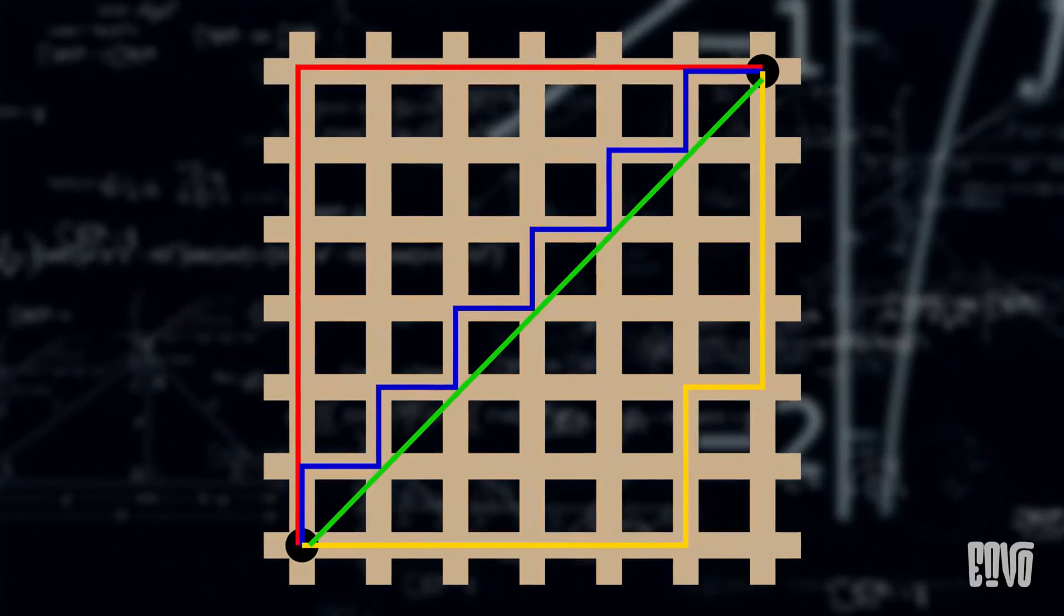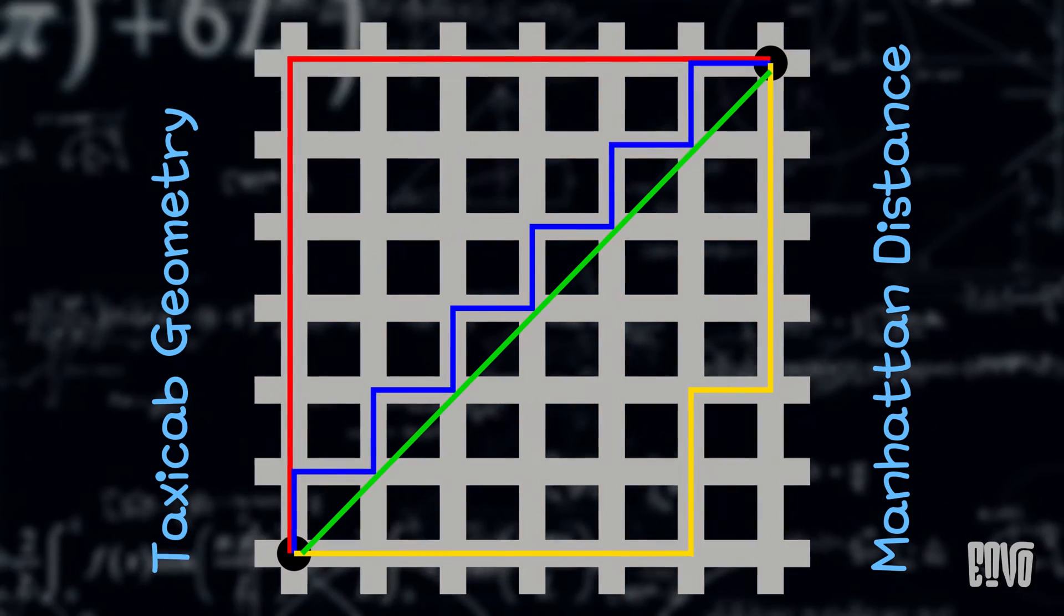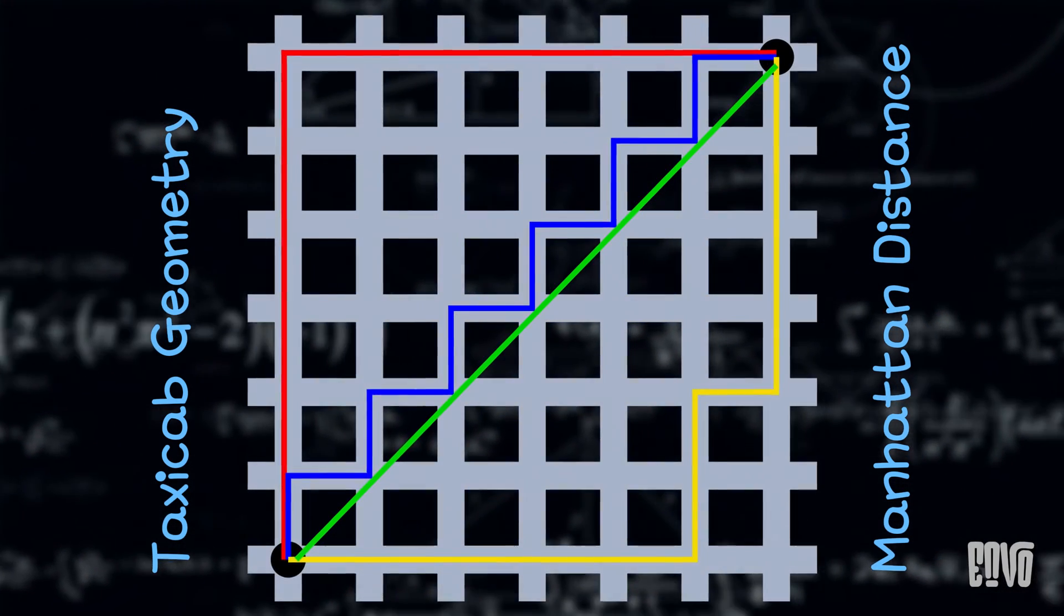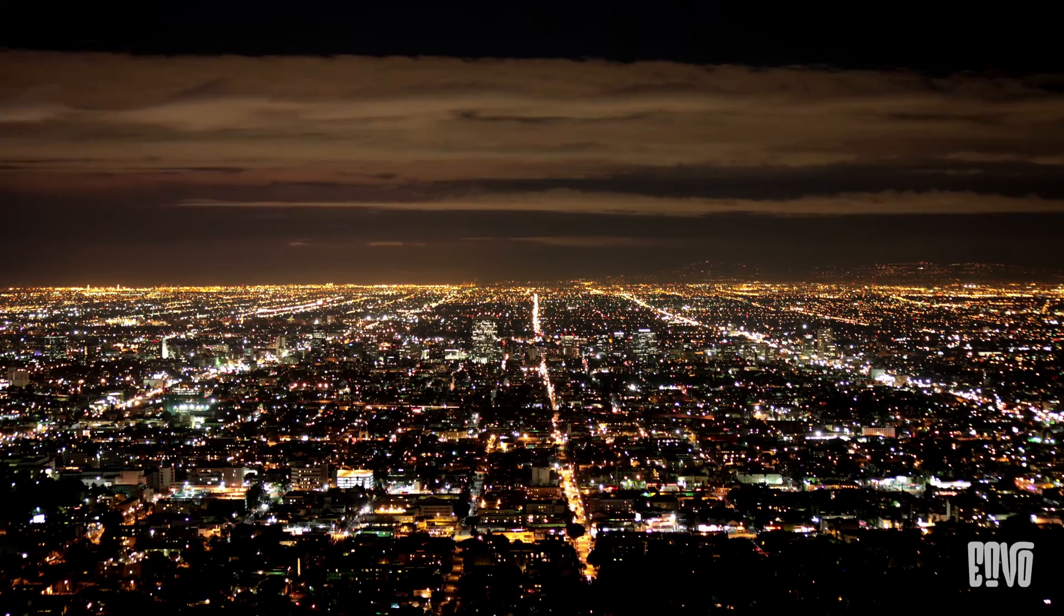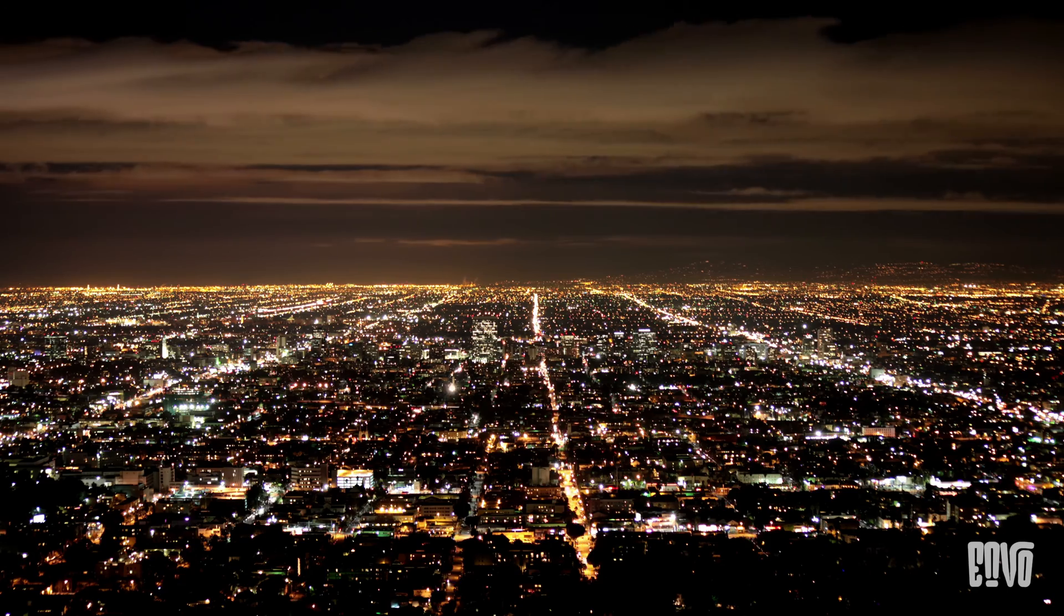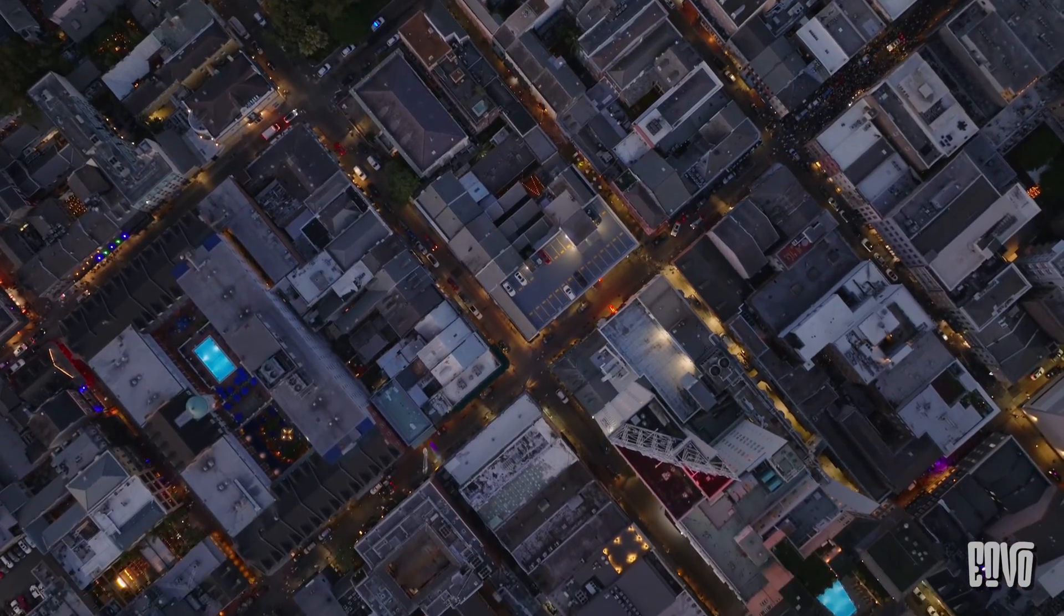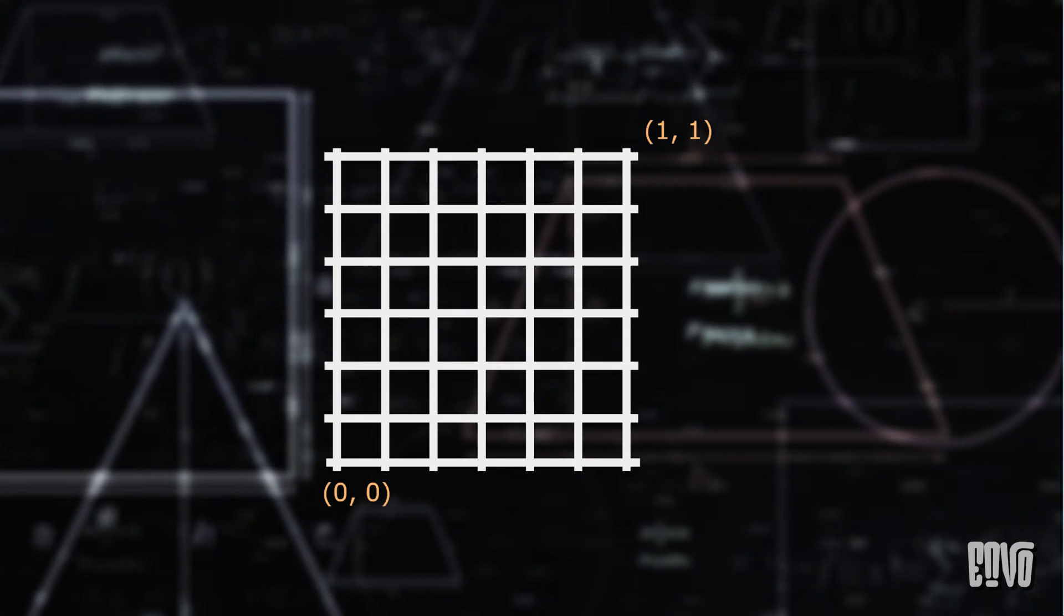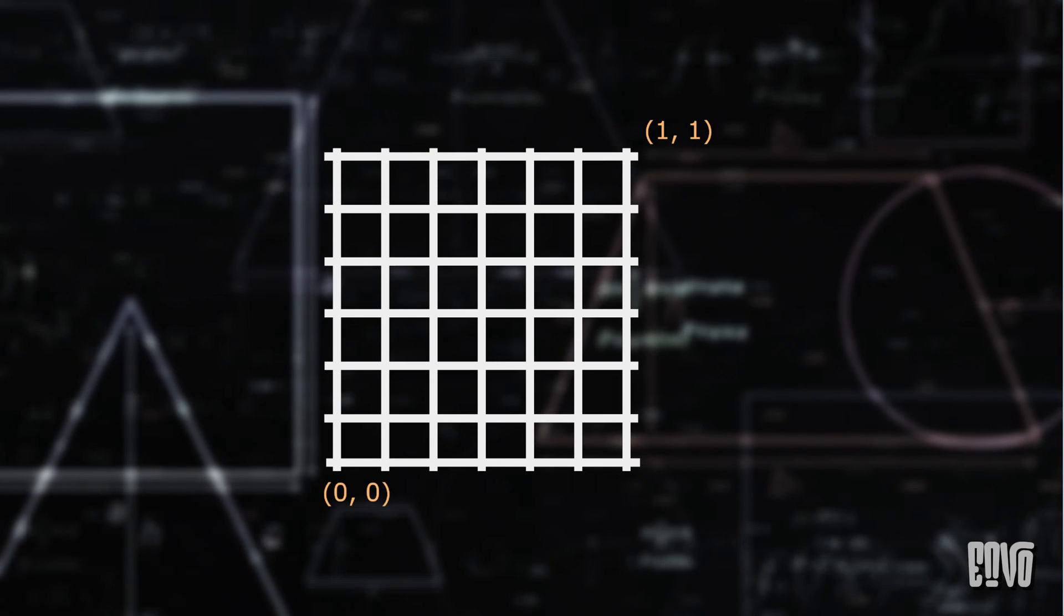The staircase paradox isn't alone in challenging our geometric intuition. In taxicab geometry, also known as Manhattan distance or L1 norm, the distance between two points isn't measured as a straight line but as the sum of the absolute differences of their coordinates. Think of a city grid. A taxi can only travel along streets, not cut diagonally through buildings. In this geometry, the diagonal distance from (0, 0) to (1, 1) is indeed 1 plus 1 equals 2.